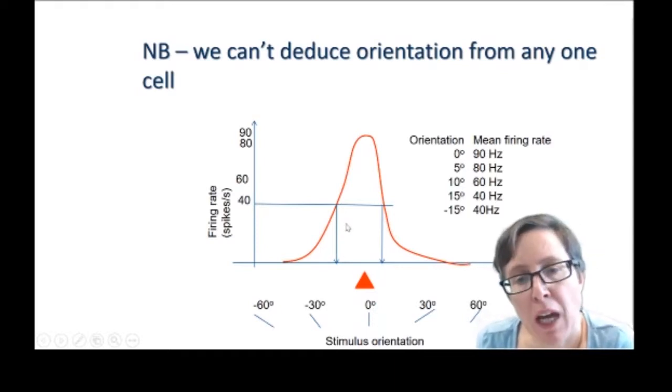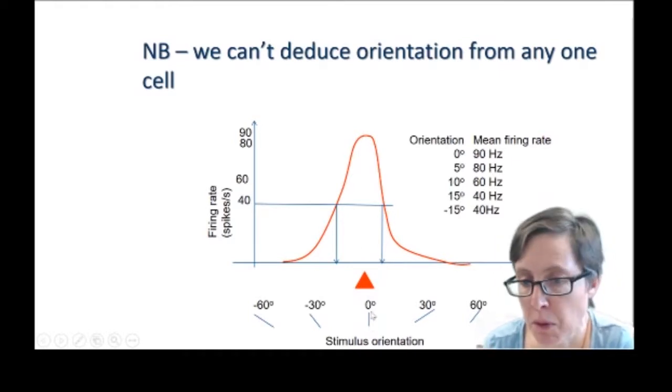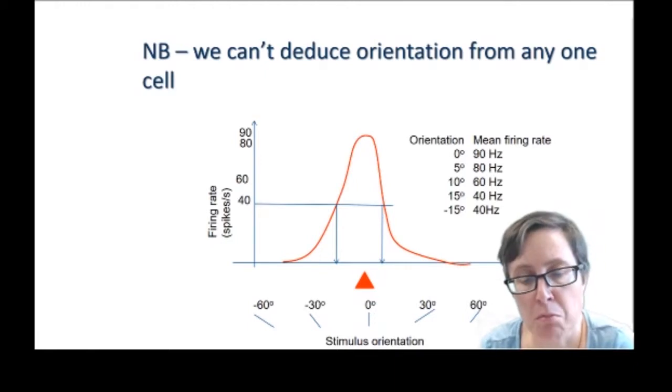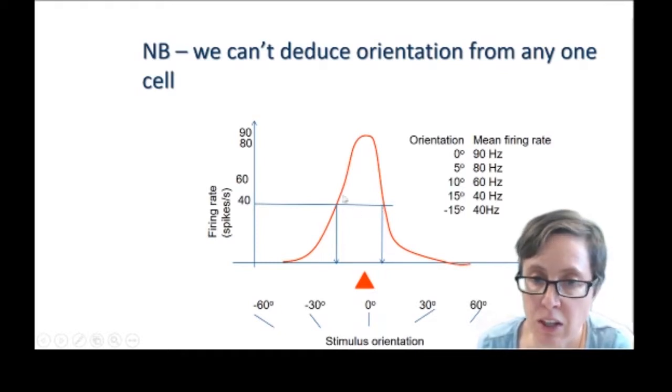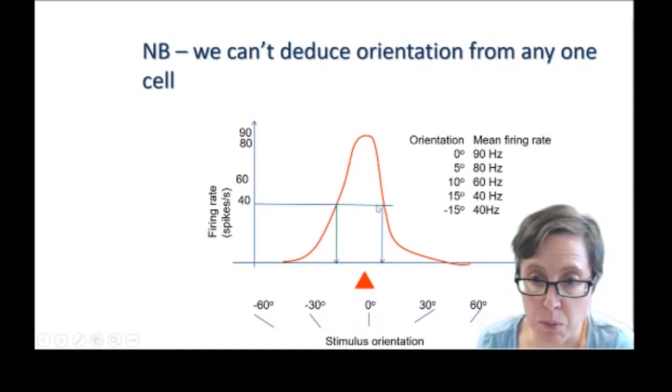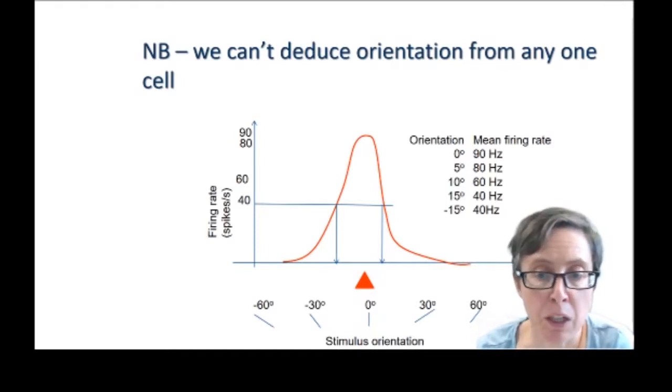So immediately we have an ambiguity. If it's firing at 90 we could say fine, the cell must be seeing a bar at zero, its preferred orientation. But what if the firing rate is 40 spikes per second? There are two orientations that give that output. And so you won't know whether the orientation in the receptive field is plus or minus 15 degrees. And that's not the only ambiguity. There are other much more serious ones.